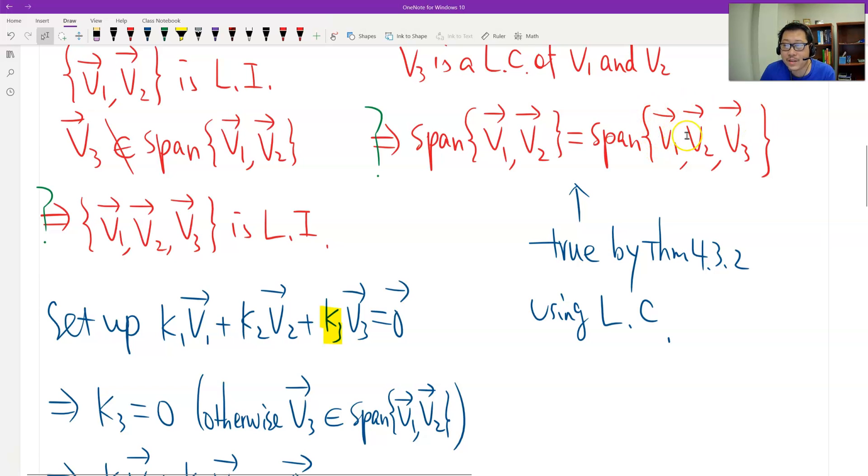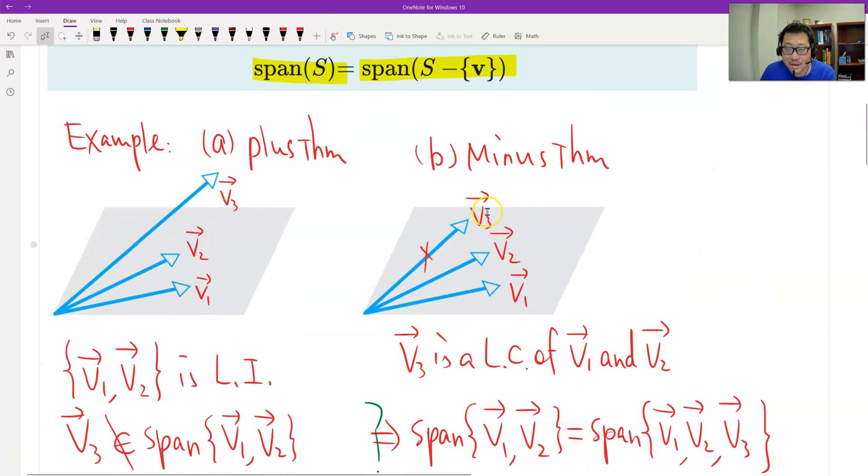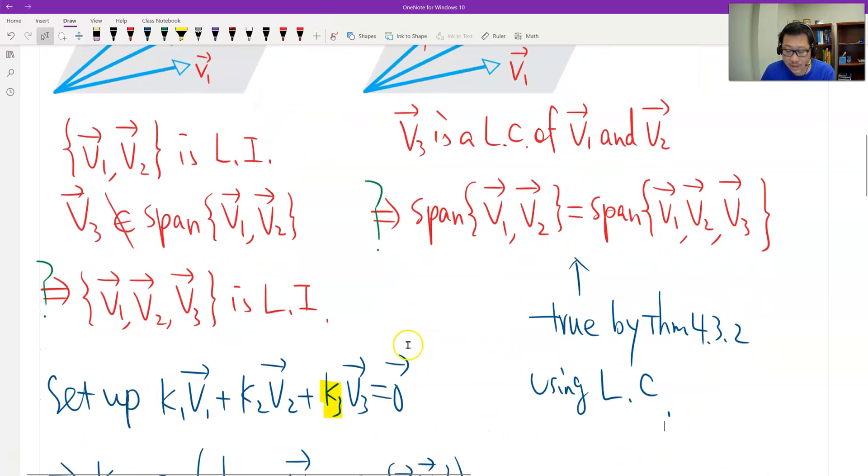That theorem says if any vector is a linear combination of the other set, the span should be the same. Can we just look at it in detail? V1 is a linear combination of this with coefficient one, zero, zero. V2 is the same: zero, one, and zero. And then we look backwards. V3 is a linear combination of V1 and V2. V2 is also a linear combination of V1 and V2. How about V3? We have V3 is a linear combination of V1 and V2. The only one we need to verify is this. But this V3 is a linear combination because V3 is a linear combination of V1 and V2. Is that true? Therefore, we also prove the second minus.